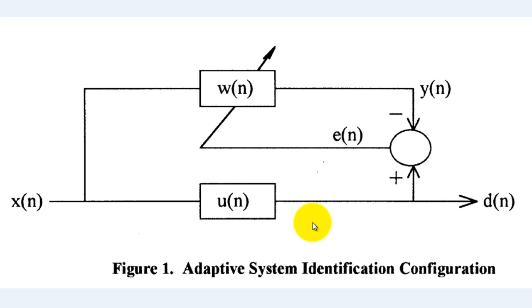All four systems have the same general parts. There will be an input, a desired result, an output, an adaptive transfer function Wn, and an error signal En, which is the difference between the desired output Un and the actual output Yn.